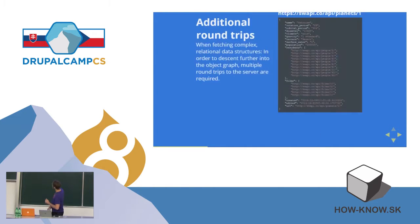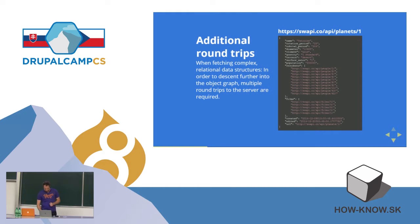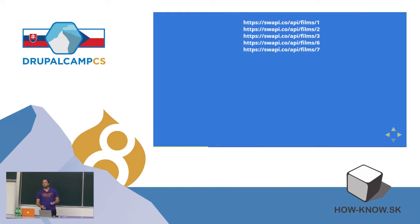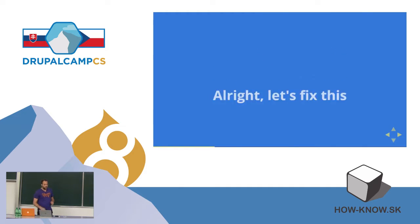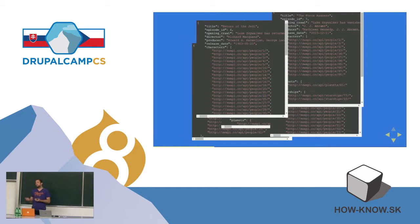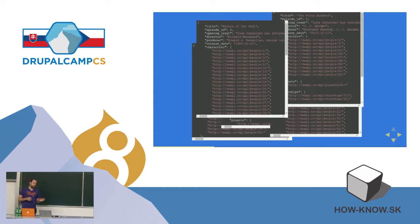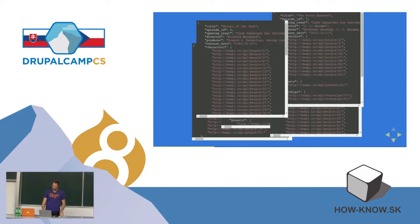It gets even worse if we want to fetch information about the films that the person was involved with — it really quickly gets out of hand. Imagine you're building this front-side application and what it feels like for the user: they come onto your website and the data pops up one piece at a time. That's a very horrible user experience.